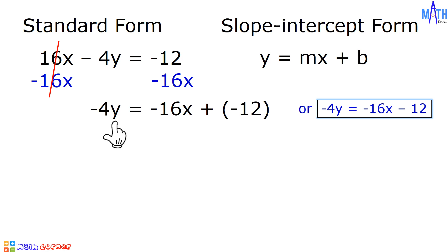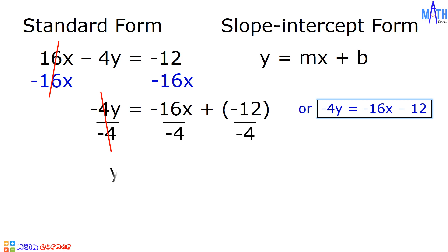To solve for Y, we need to divide both sides of the equation by negative 4. Negative 4y divided by negative 4 equals negative 16x divided by negative 4 plus negative 12 divided by negative 4. Let us simplify: negative 4y divided by negative 4 is equal to Y; negative 16x divided by negative 4 is equal to positive 4x; and negative 12 divided by negative 4 is equal to positive 3. And this is the slope-intercept form of 16x minus 4y equals negative 12, where M is equal to 4 and B is equal to 3.